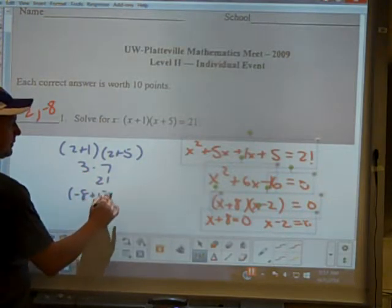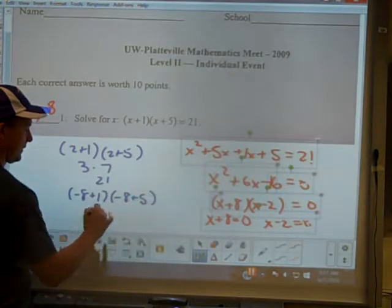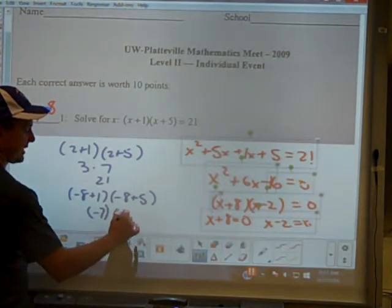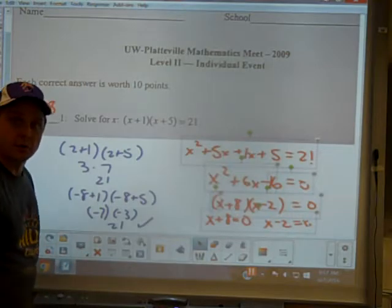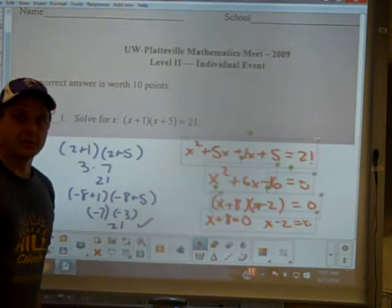Negative 8 plus 1. Negative 8 plus 5. Negative 7 times negative 3, 21. Alright. Keep practicing. Math team is coming.